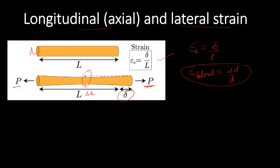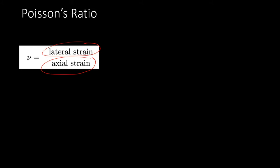This change in diameter is due to the axial force, meaning two strains are produced in the body due to one directional force. The strain along the direction of force is called axial or longitudinal strain, while the strain perpendicular to the force is called lateral strain. The relation between longitudinal and lateral strain is given by Poisson's ratio — the ratio of lateral strain to axial strain.